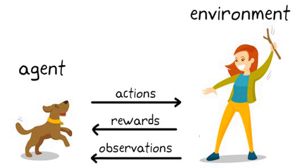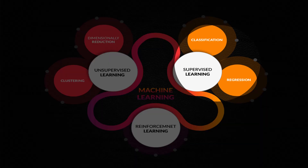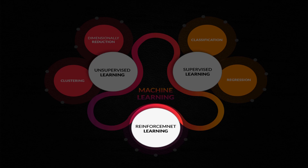To summarize: there are three types of machine learning — supervised learning, unsupervised learning, and reinforcement learning. In supervised learning, we have two types: regression and classification. Unsupervised learning is divided into three types: clustering, anomaly detection, and dimensionality reduction. And the third main type is reinforcement learning.